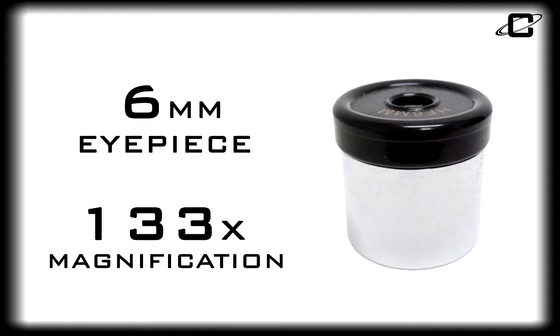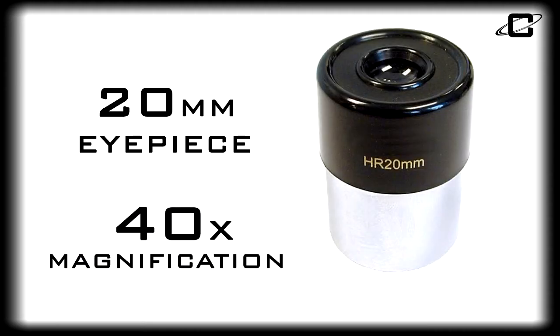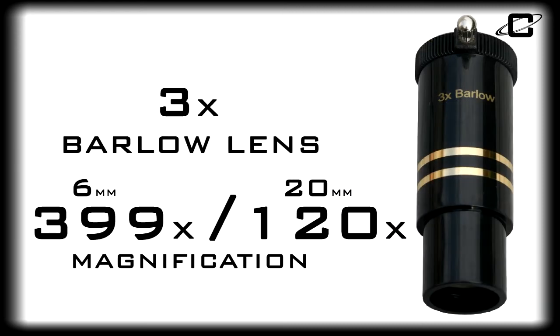Accessories include 6mm and 20mm inch and a quarter eyepieces, and a 3-power Barlow lens that increases the power of the included eyepieces by 3 times.